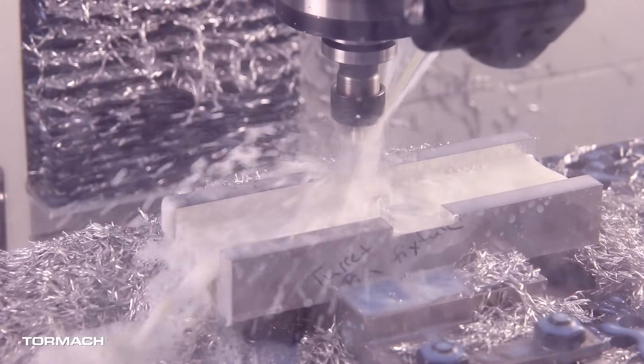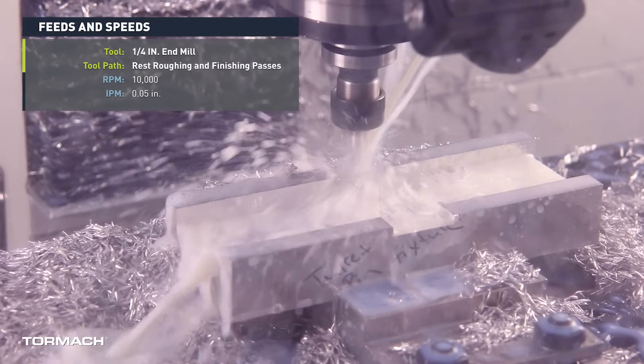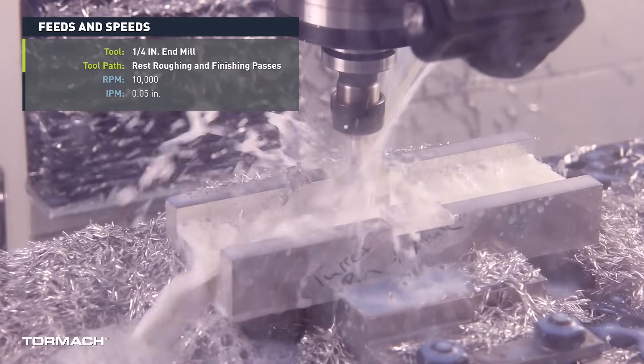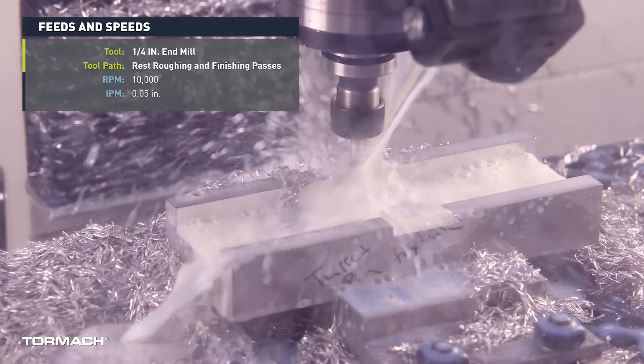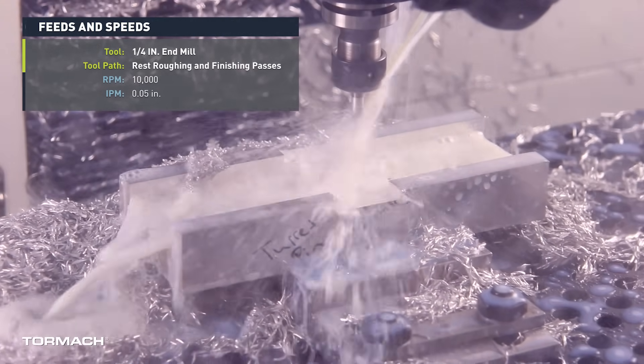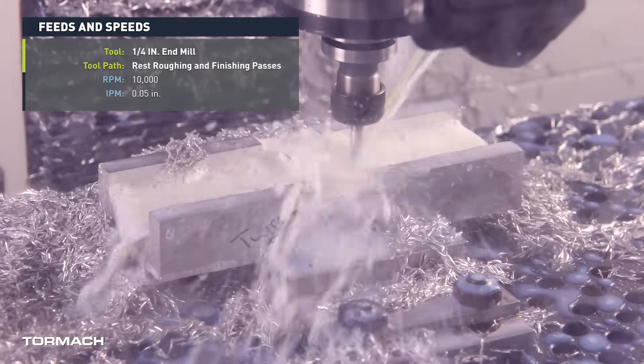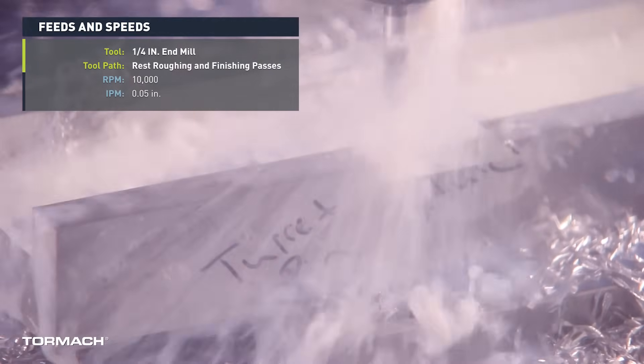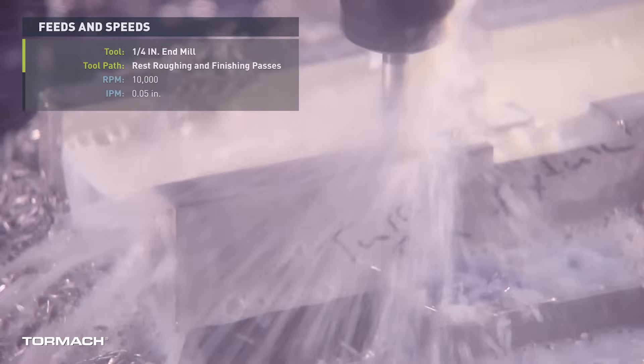Next we came to the quarter inch end mill. We used this for some rest roughing and the finishing passes. First thing we did was bore out our datum hole. We pre-drilled it with that number 29 drill. Then we came back and just plunged the end mill in with a real light peck just to put the datum feature in so that we can indicate this in as our zero point.